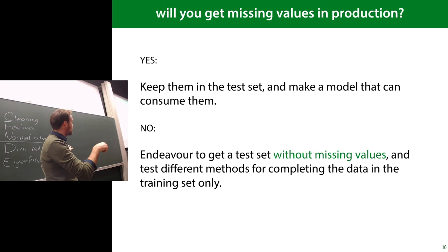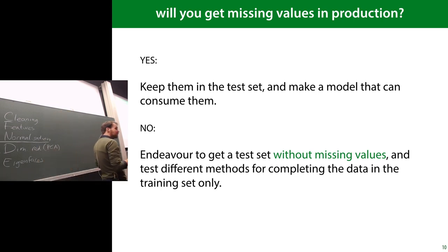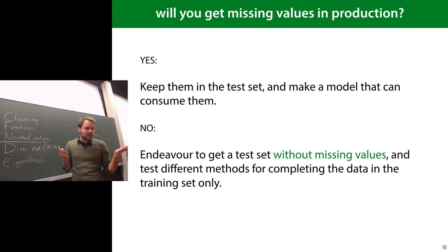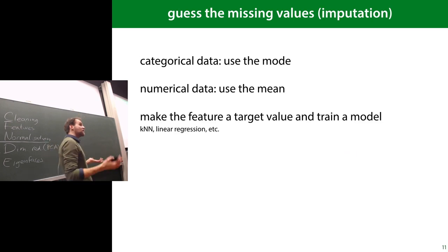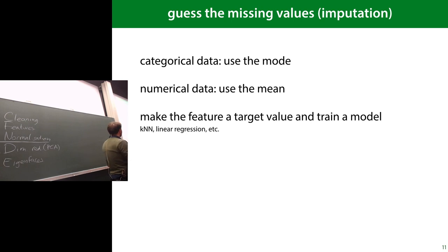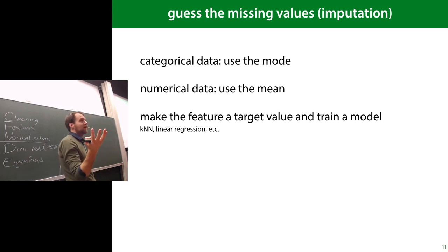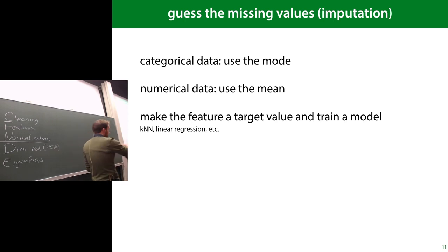Let's say we have the ideal situation where our test set has no missing data but our training data does. One approach is imputation — just fill in the missing values with guesses. A very simple way is to use the mode or mean value and see how well it works. Quite often these missing values are rare, so really anything is fine — you just want your algorithm to run.